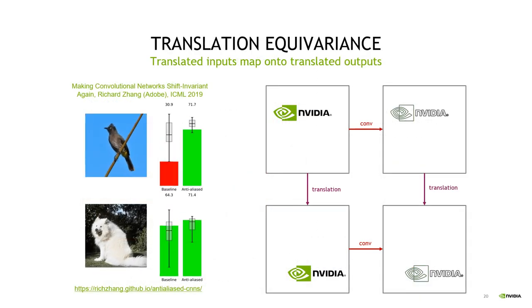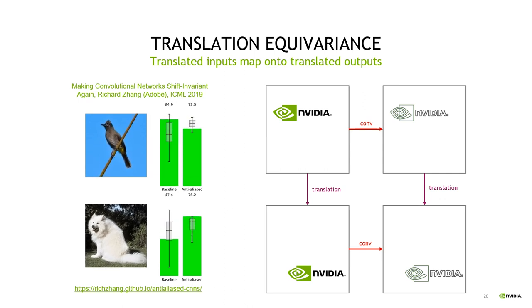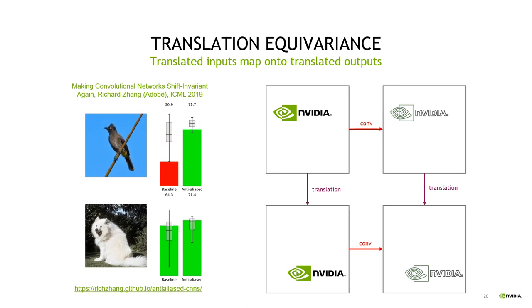Convolutions have another nice property, which is called translation equivariance. On the right side, you see a scheme with an NVIDIA logo on top, where we have applied a convolution to that logo, which is more or less an edge detector. Now, you would naively expect, if you translate the input, that you also translate the output. And indeed, that is the case for convolutions. Whenever a map commutes with a translation, you call that map translation equivariant. If you sum over the output, you could even make it translation invariant.